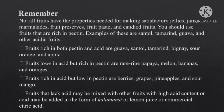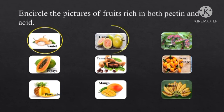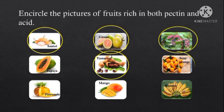Now let's try this activity to measure mastery in preparing acid, pectin, and sugar mixture. All you have to do is encircle the pictures of fruits rich in both pectin and acid. Let's see: santol — very good; guava; tamarind; bignay; and sour orange.